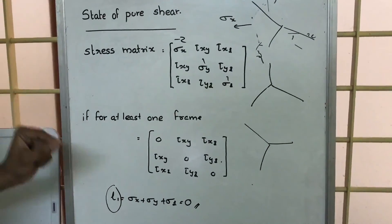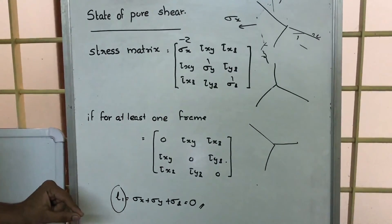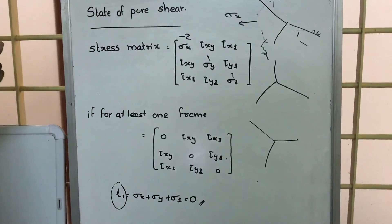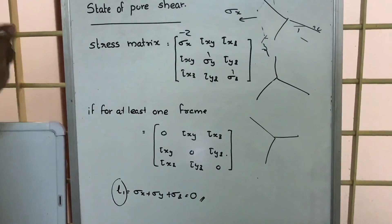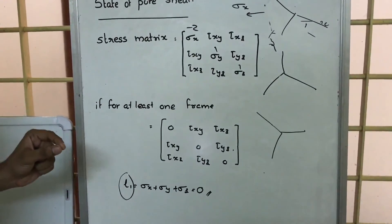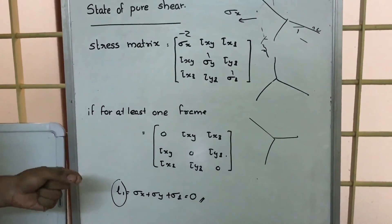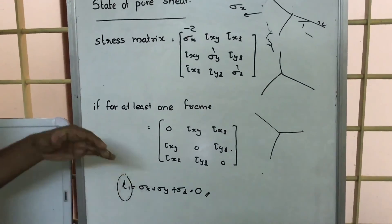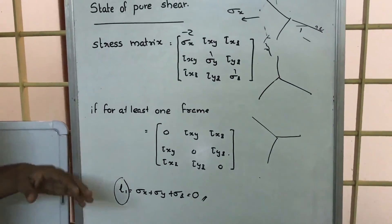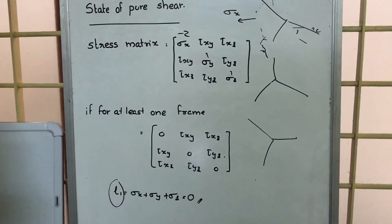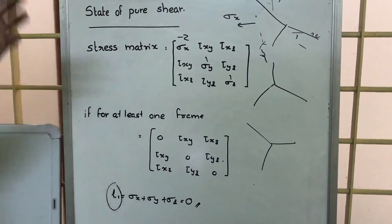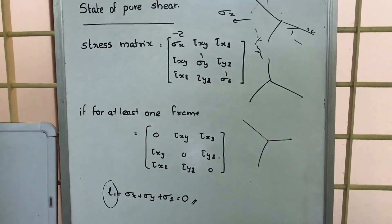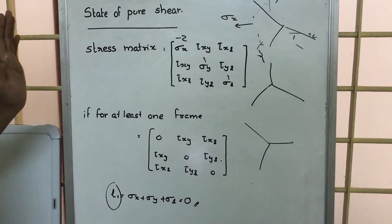In total, we can say the state of pure shear means the direct stresses sigma x, sigma y, sigma z will be zero in at least one matrix, or equivalently, their sum at every matrix will be zero. Thank you.